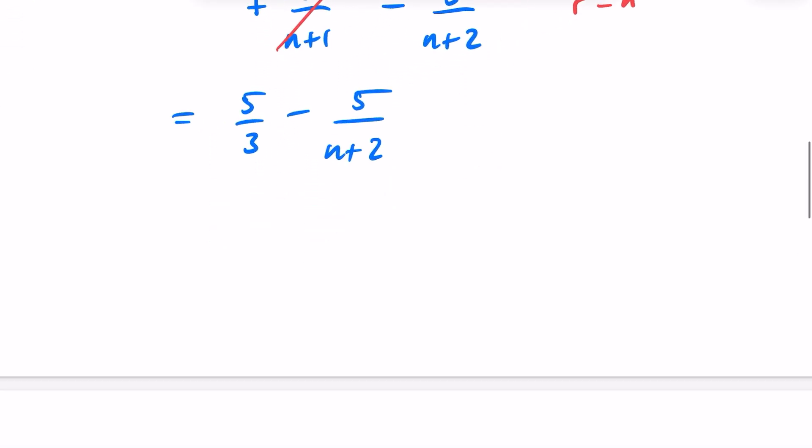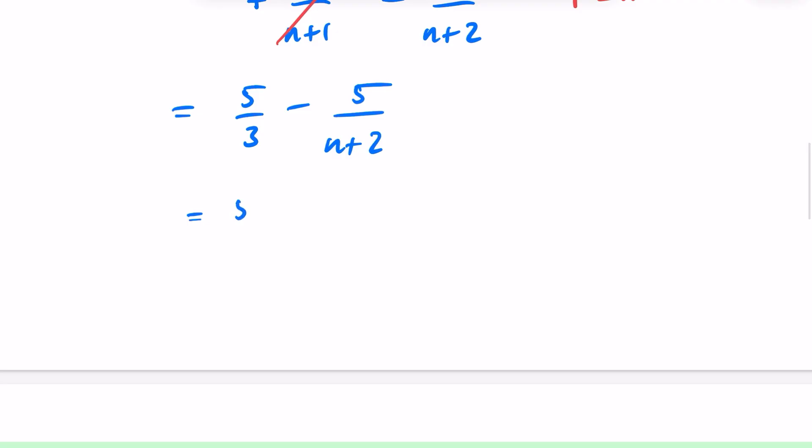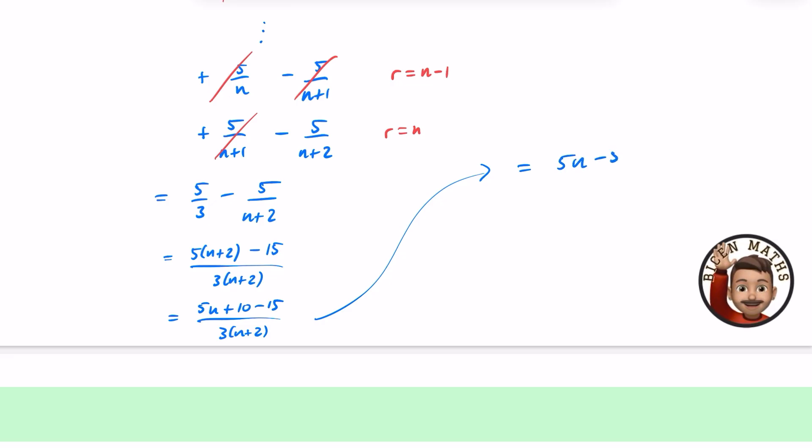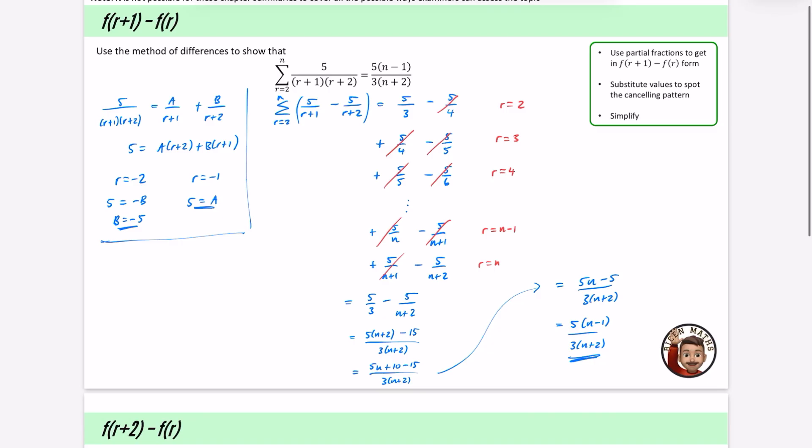All that's left to do is just create a common denominator. So we will have the 5 and the N+2 minus the 5 times the 3, which is the 15, and we have the 3 and the N+2. We would have a 5N+10 minus the 15 over 3(N+2). So that is 5N-5 over 3(N+2), which is 5(N-1) over 3(N+2), which is the thing that we were looking for in the question.